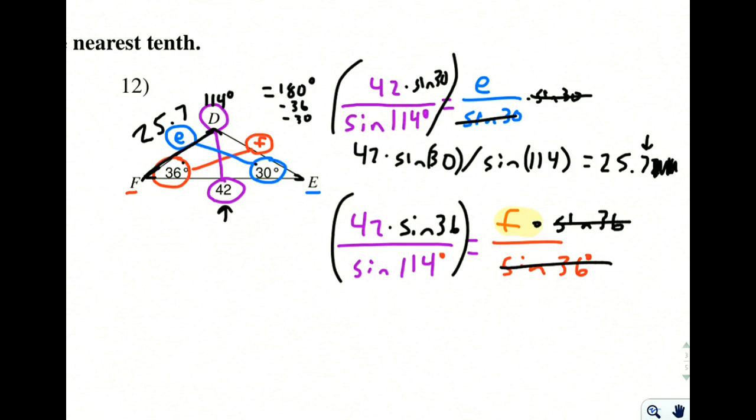So again, when you type it in your calculator, you have a 42 times the sine of 36 divided by the sine of 114. Again, if you have parentheses, make sure you close them on your calculator. Don't leave those open.